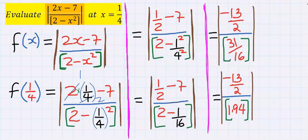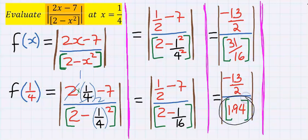Subsequently, if you solve the denominator, you are going to get 31 over 16, and 31 over 16 is the same as 1.94 to 2 decimal places.